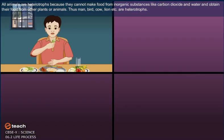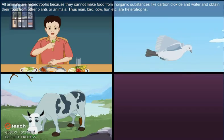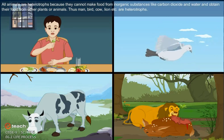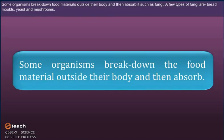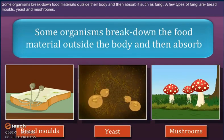Thus, man, bird, cow, lion, etc. are all heterotrophs. Some organisms break down the food material outside their body and then absorb it, such as fungi like bread molds, yeast and mushrooms.